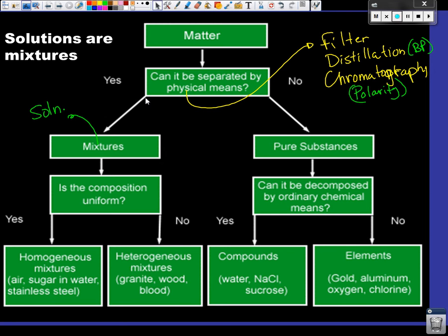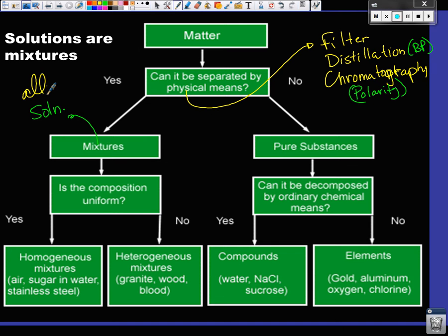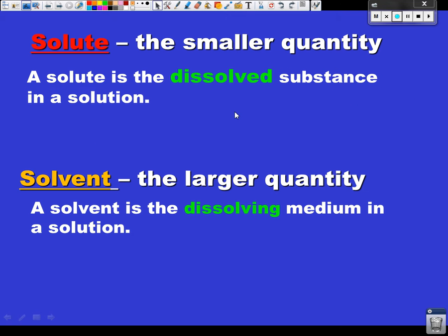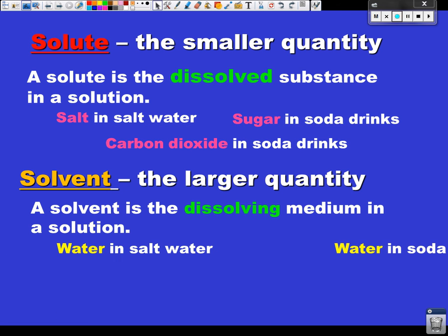So don't just automatically, mentally say, okay, a solution is a liquid, because can a solution be a gas? Yes. And this is even weirder. Can a solution be a solid? But we have special names for those things. What is that called? Alloys. So alloys are metal solutions. We just have a special name for them. They visibly look the same.